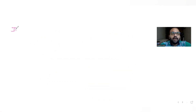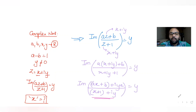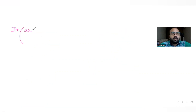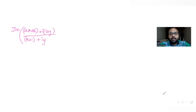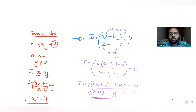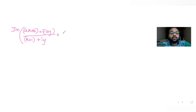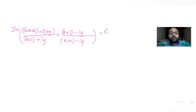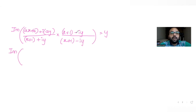After rationalizing, I have the imaginary part of [(ax + b) + iay] divided by [(x + 1) + iy]. I multiply and divide the entire expression by the conjugate of the denominator, which is (x + 1) minus iy. Expanding: (ax + b) is multiplied by this entire conjugate expression.